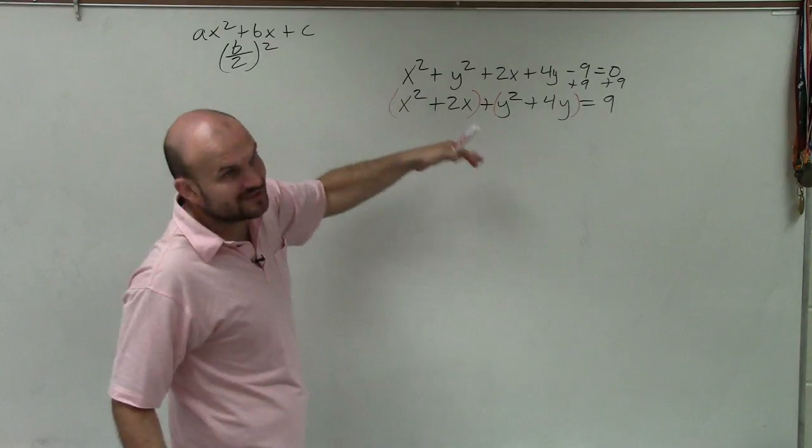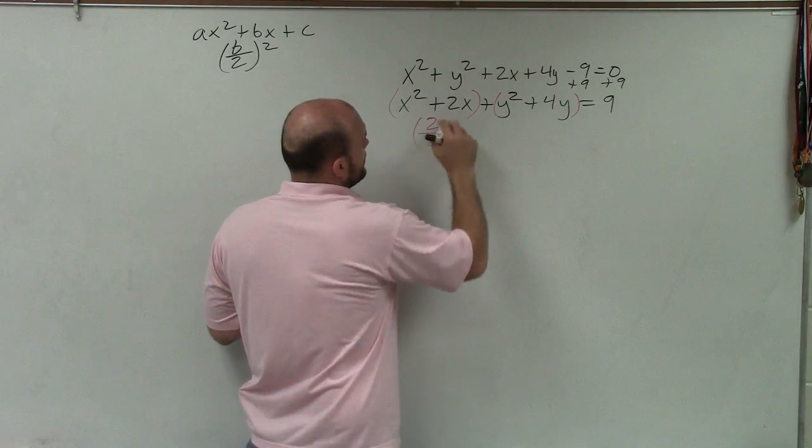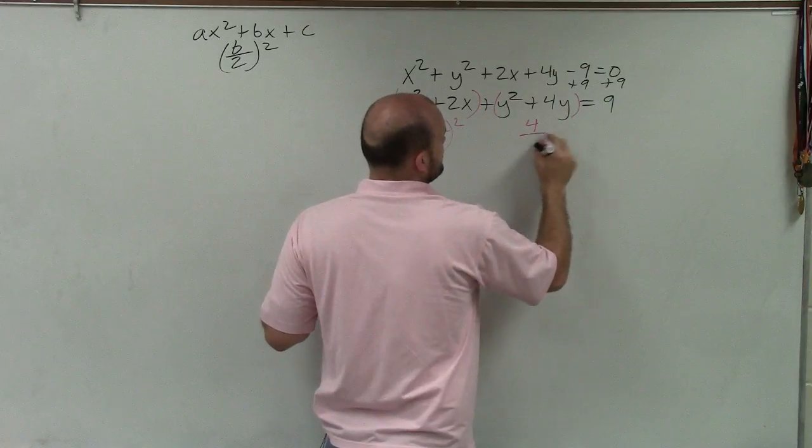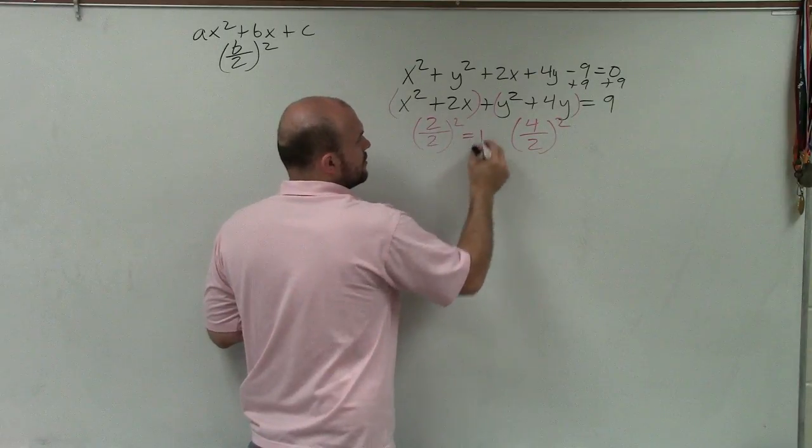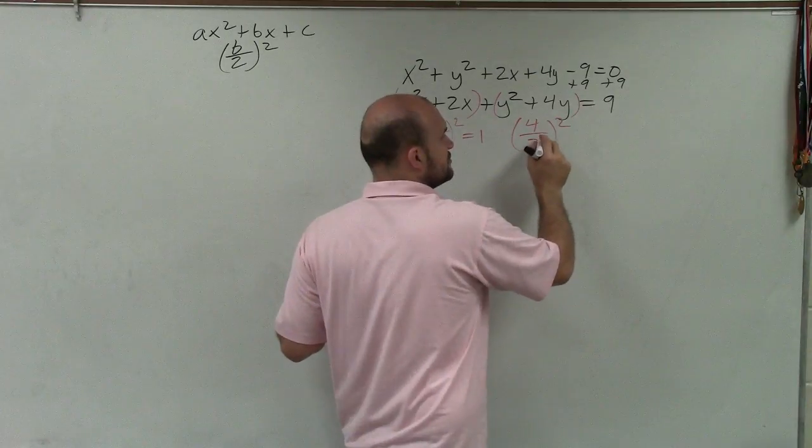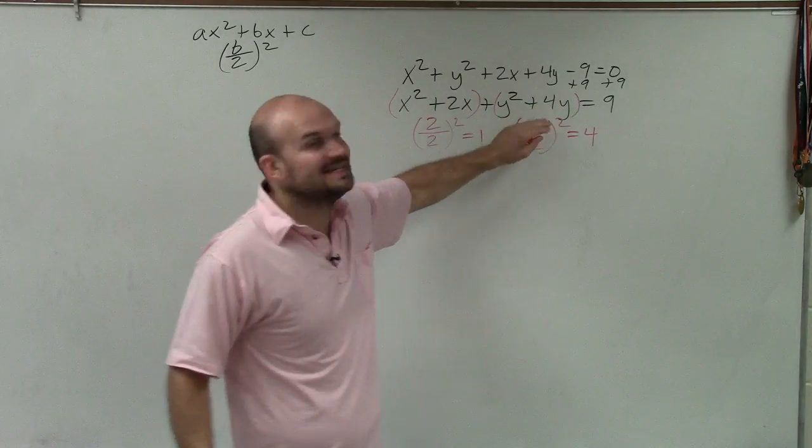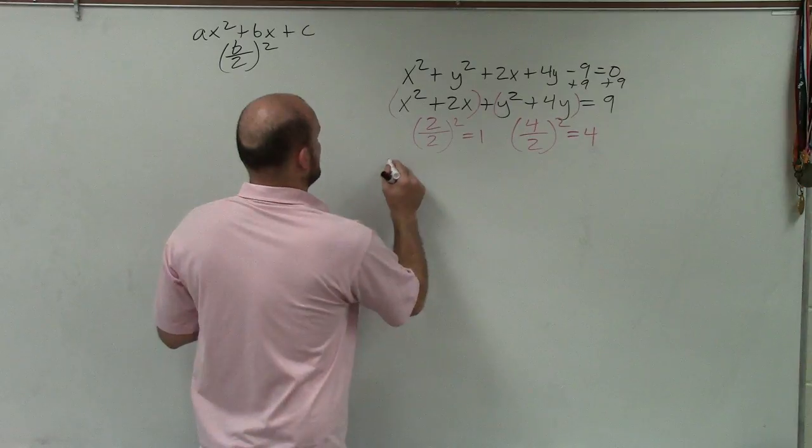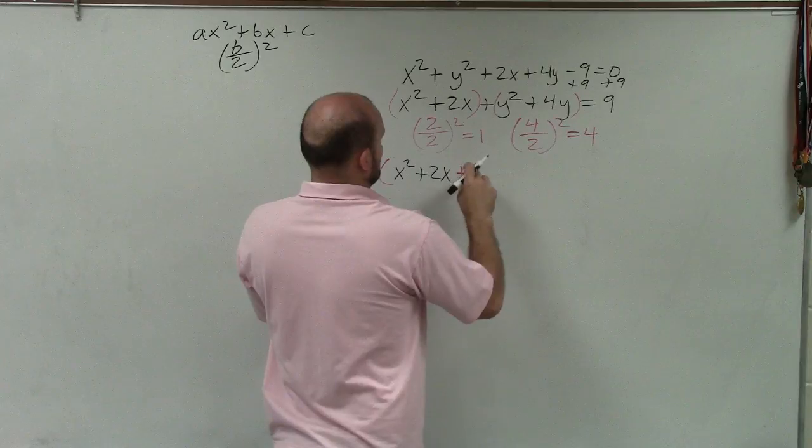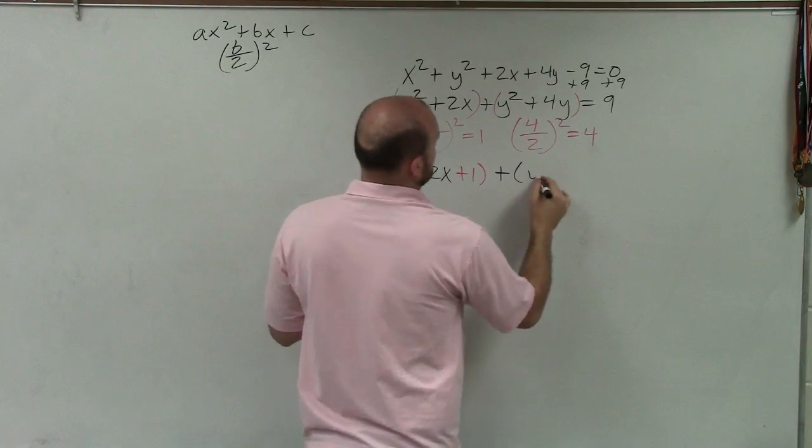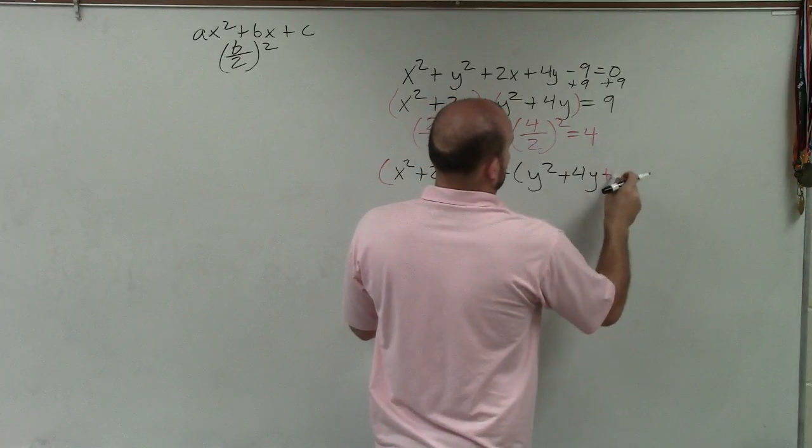So in this case, we don't have a c, but we don't need a c. All we need to do is take 2 divided by 2 and square it. So 2 divided by 2 is 1, 1² equals 1. 4 divided by 2 is 2, 2² equals 4. So now what I'm going to do is I'm going to take both of these terms and add it into my parentheses. Therefore, I have x² + 2x + 1 + y² + 4y + 4.